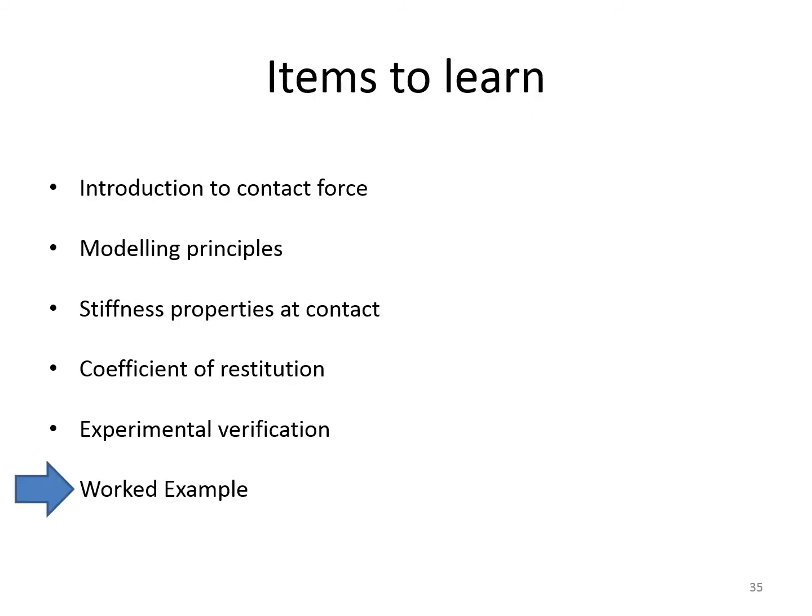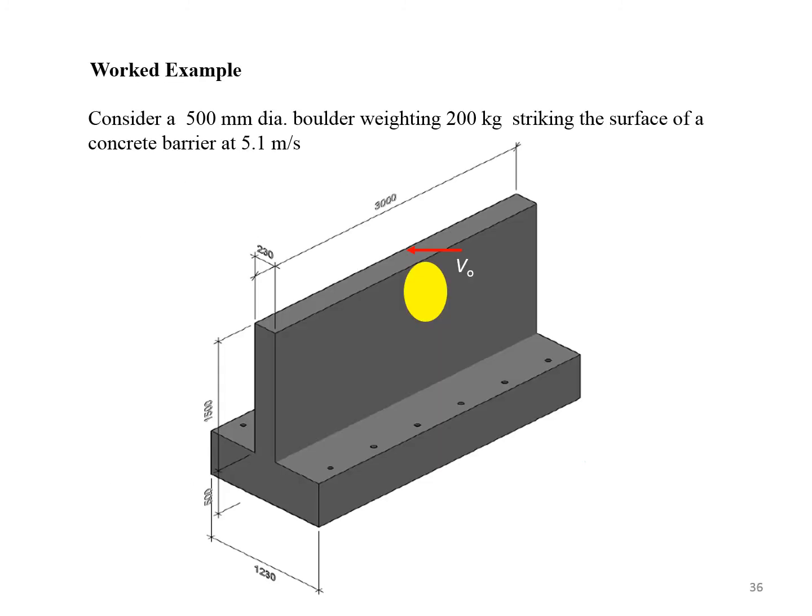A worked example involving the use of Excel spreadsheets to simulate the forcing function of contact is presented to illustrate the operation of the analytical model. The worked example involves a boulder weighing 200 kg striking the surface of a concrete barrier at a velocity of 5.1 meters per second.